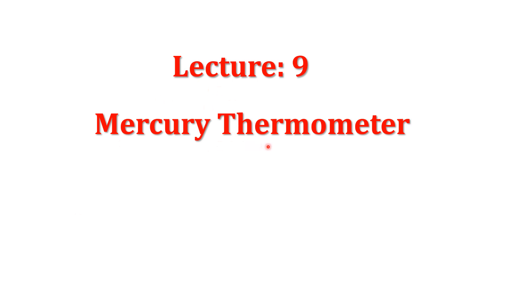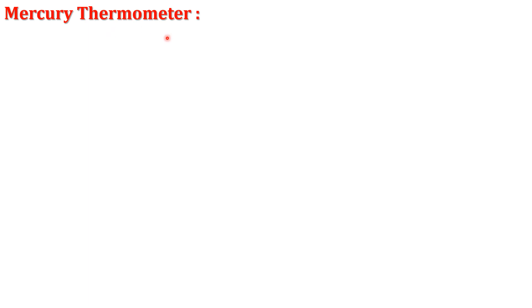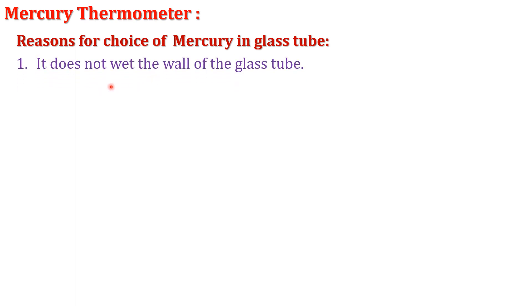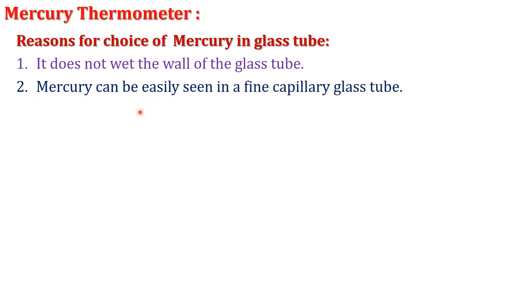Today's topic is the mercury thermometer. We discuss the reasons for the choice of mercury in a mercury thermometer. The first reason is it does not wet the wall of the glass tube. Second, mercury can be easily seen in a fine capillary glass tube since mercury has a shining appearance as compared to any other liquid.